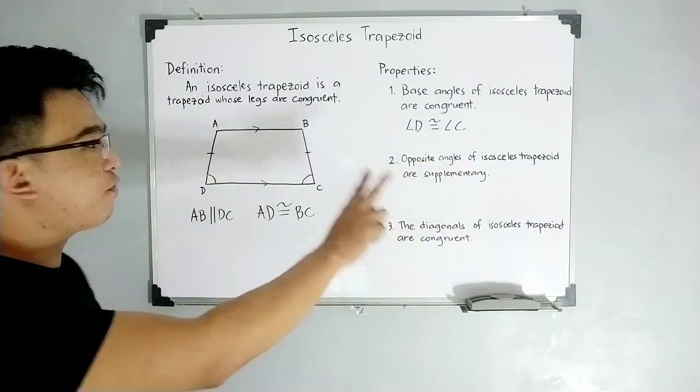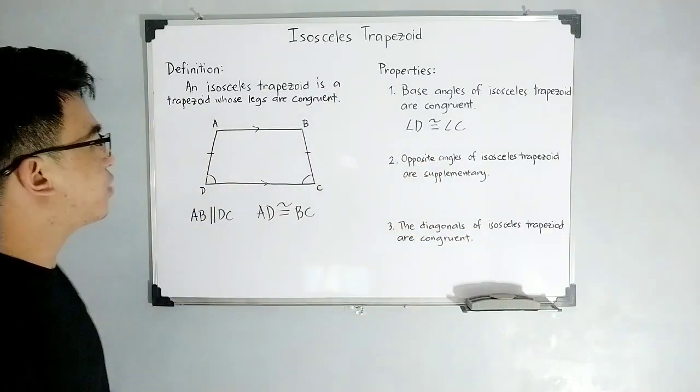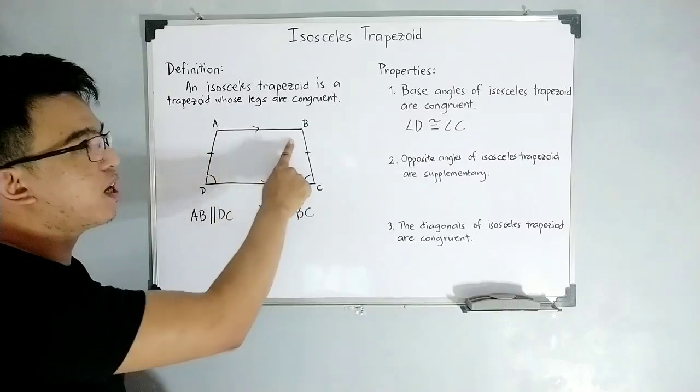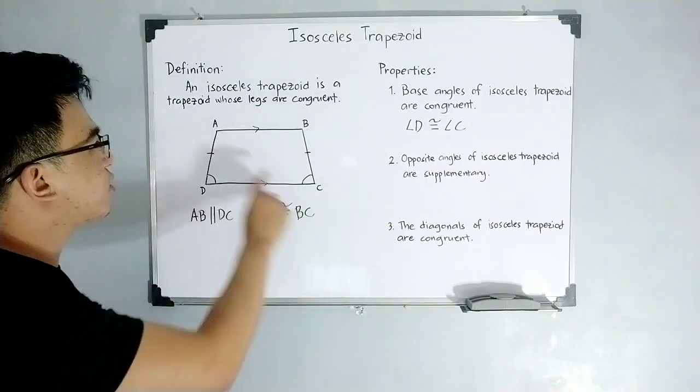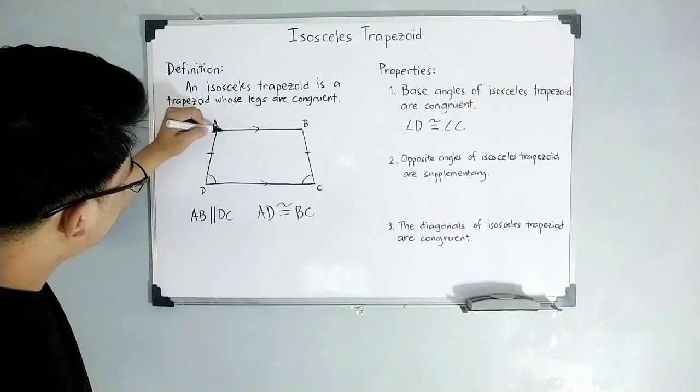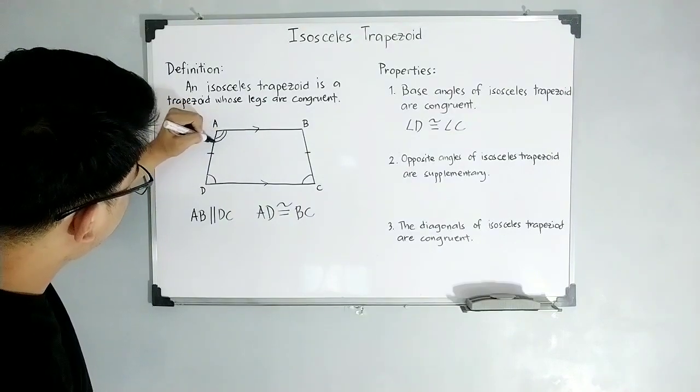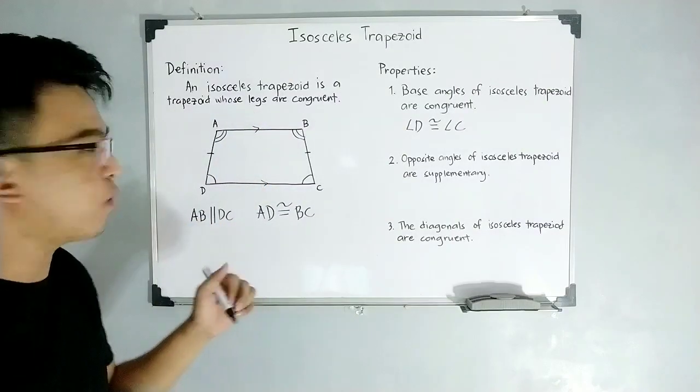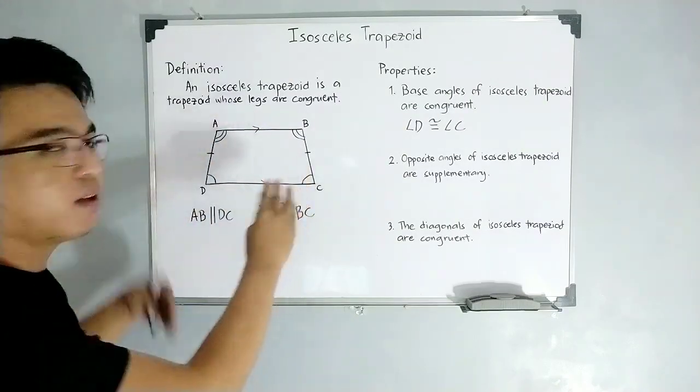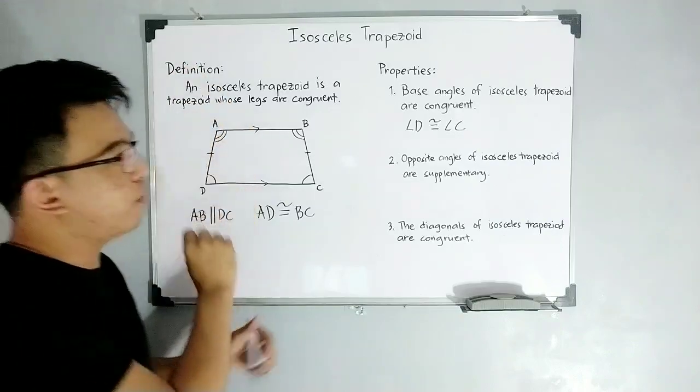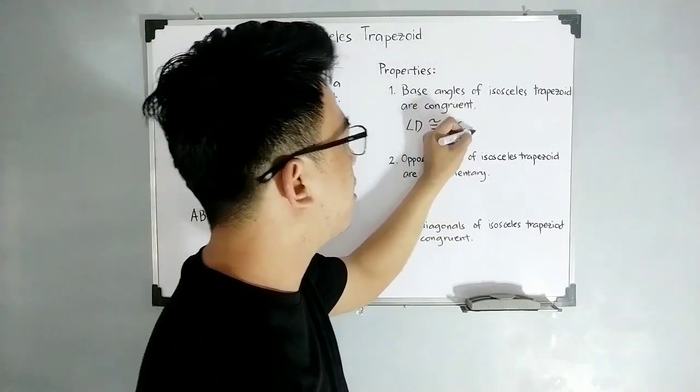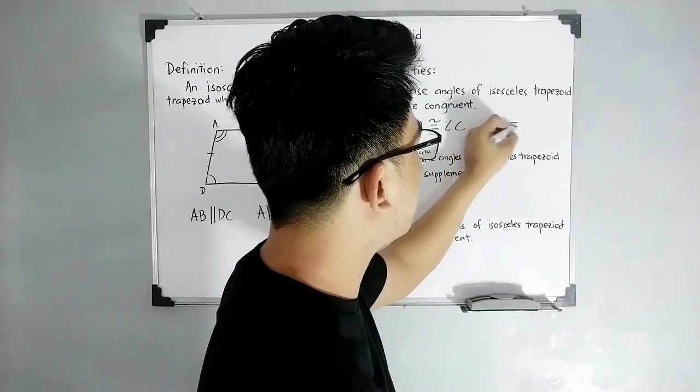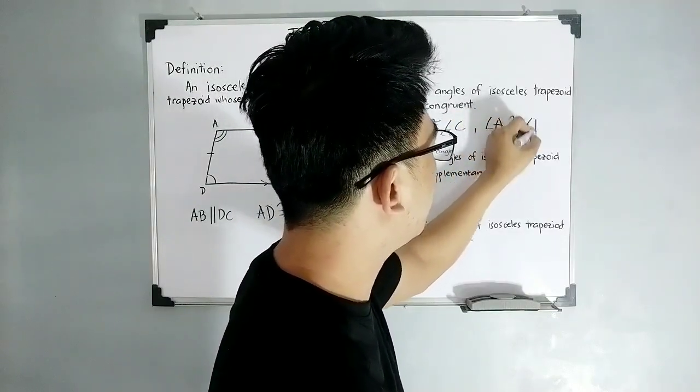So we can say here that angle D is congruent to angle C. This is the first pair of congruent base angles. So let's move on with the next pair. Here, focus now on your side A, which is your upper base, in which your angle A is congruent to your angle B. They are both congruent because they belong to the upper base. So we can have here this statement, angle A is congruent to angle B.